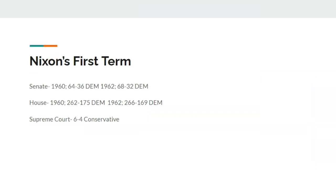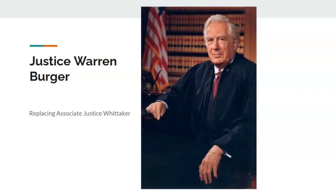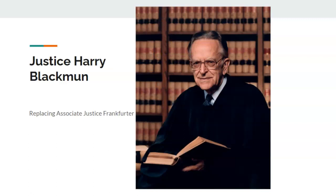The first nomination is Associate Justice Warren Burger, who is replacing Associate Justice Whittaker — Nixon nominates Burger for the position. The second is Associate Justice Harry Blackmun, chosen to replace Associate Justice Frankfurter. So Nixon chooses those two to replace the two justices.